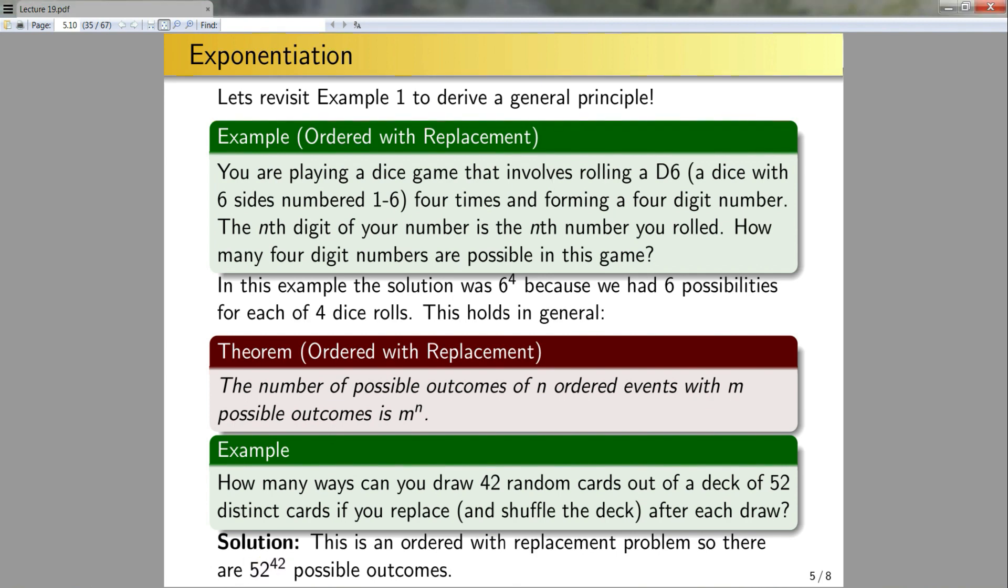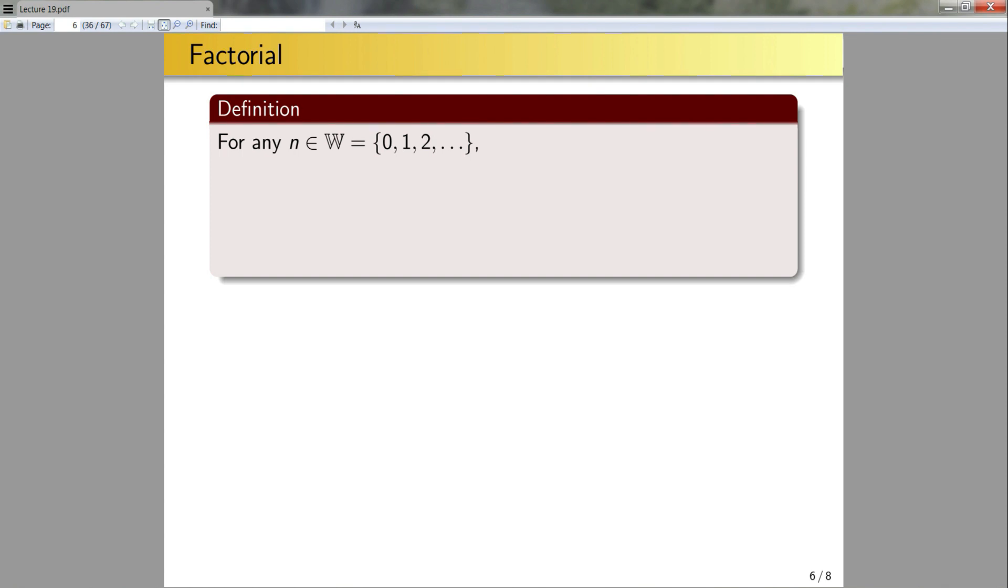Now let's introduce a new tool to our toolbox, factorial. For any n in w, so this is the numbers 0, 1, 2, 3, and so on, we're going to define n factorial pronounced n! to be this piecewise function. It's equal to 1 if n is 0, otherwise it's equal to n times n minus 1 factorial. Note this is a recursive definition.